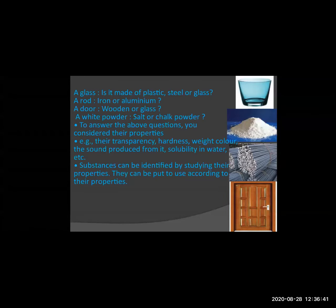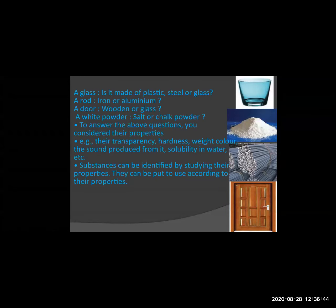Now we will study in detail the properties of substances. First is brittleness. For example, in school we take a chalk and if it falls down from our hand, it breaks immediately. The substance breaks into small pieces — such substances are called brittle. Brittle means they are weak and easily break. This property is called brittleness. An example is chalk.